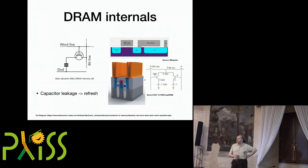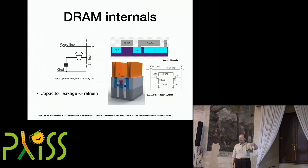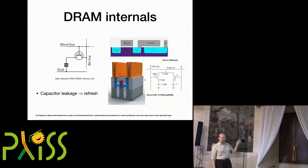So there has to be a separate process implemented external to this cell that on a regular basis checks to see what the value is and then writes it back, storing a full capacity of electrons. That's called refresh. It's one of the reasons that DRAM requires power even when you're not doing anything with it, and also the reason why when you switch it off, after a short period of time it's all gone.